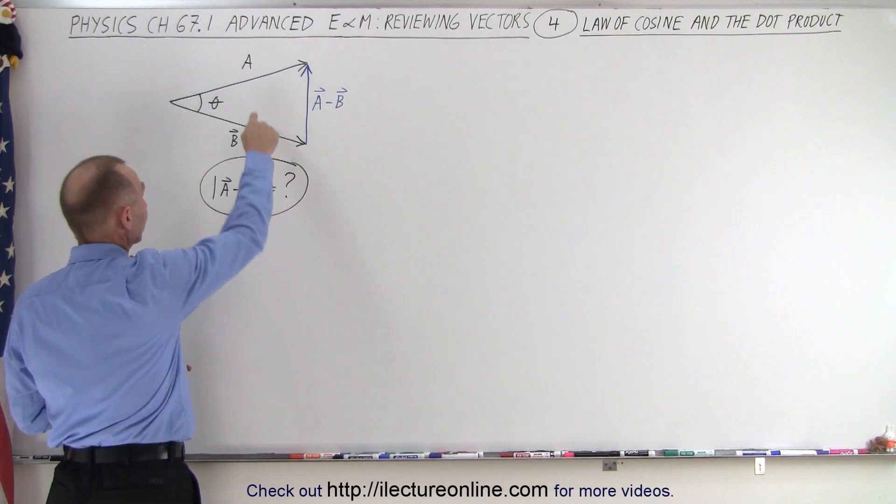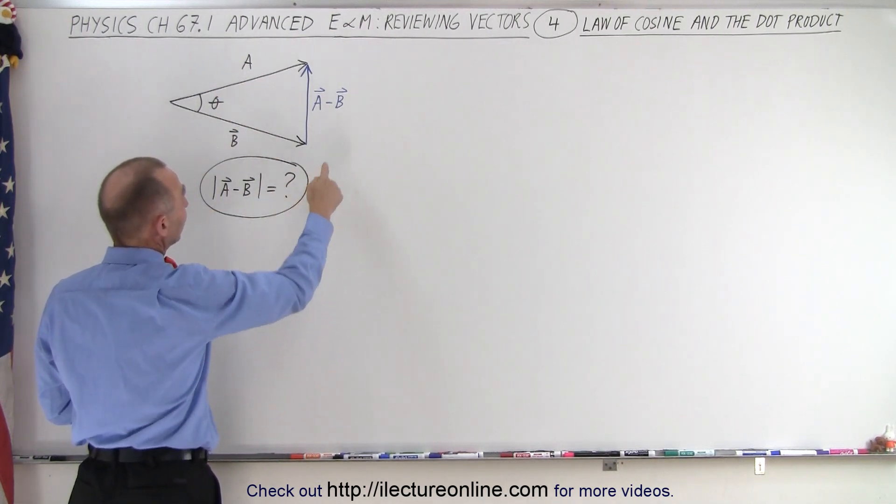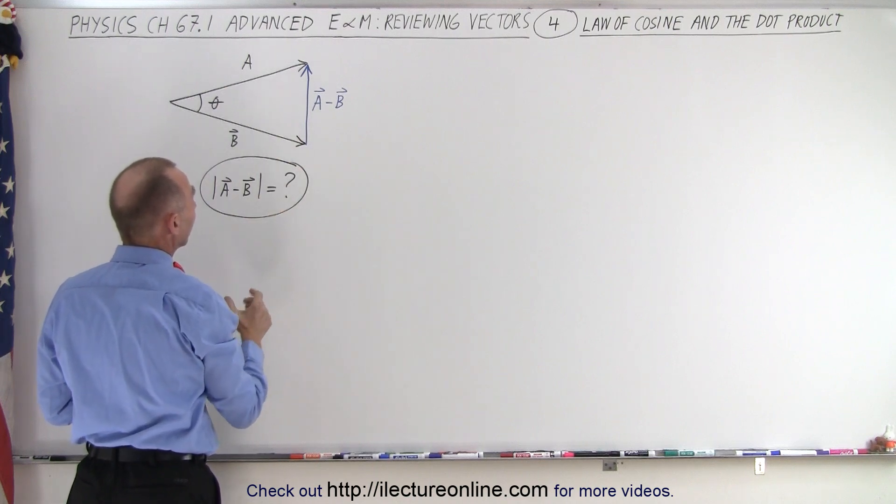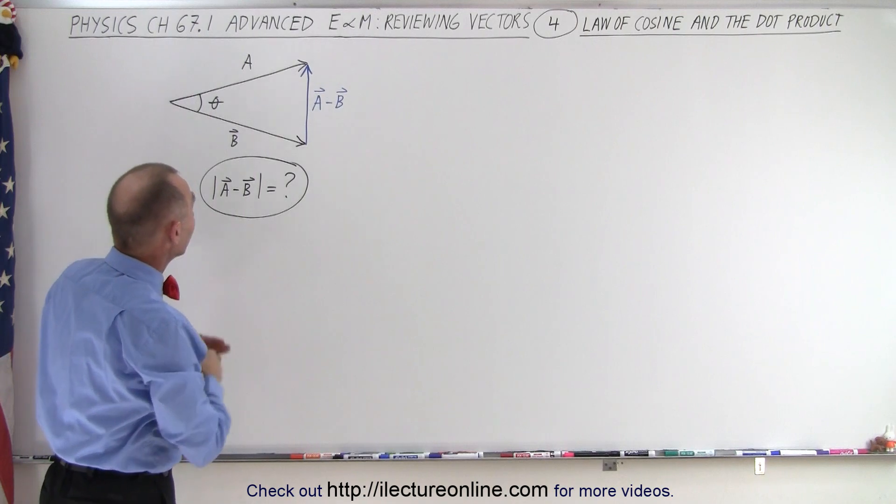Notice that if we have two vectors, a and b, with an angle between them, then we can draw the vector of a minus b. And so if we want to know the magnitude of a minus b, essentially you take a look at that and say,